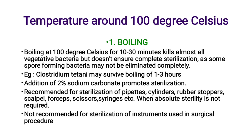Temperature around 100°C: the first method is boiling. Boiling at 100°C for 10–30 minutes kills almost all vegetative bacteria but does not ensure complete sterilization, as some spore-forming bacteria may not be eliminated completely. For example, clostridia may survive boiling for 1–3 hours. Addition of 2% sodium carbonate promotes sterilization. Recommended for sterilization of pipettes, cylinders, rubber stoppers, scalpel forceps, and scissors when absolute sterility is not required.